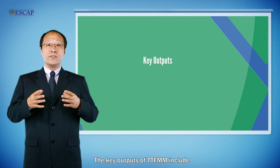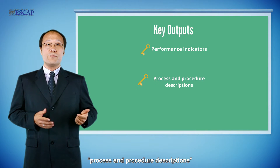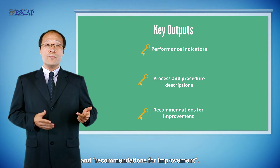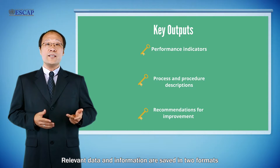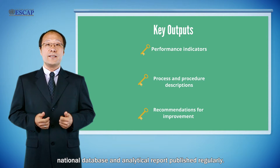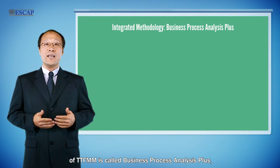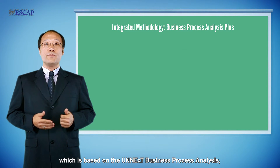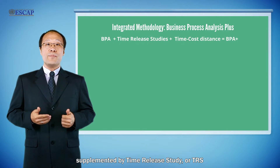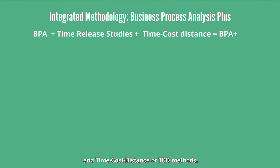The key outputs of TTFMM include performance indicators, process and procedure descriptions, and recommendations for improvement. Relevant data and information are saved in two formats: a national database and analytical reports published regularly. The methodology for data collection and analysis under TTFMM is called Business Process Analysis Plus, which is based on UN's Business Process Analysis, supplemented by Time Release Study (TRS) and the Time-Cost-Distance (TCD) method.